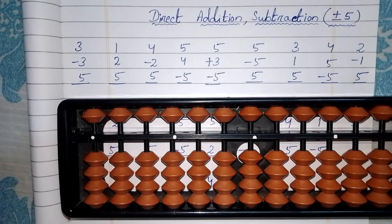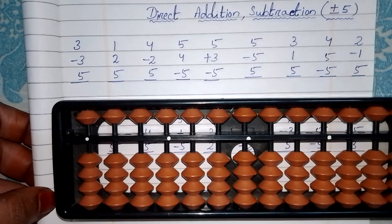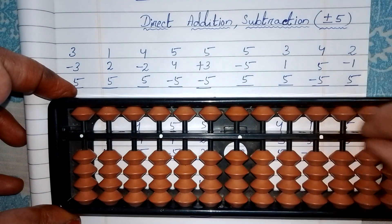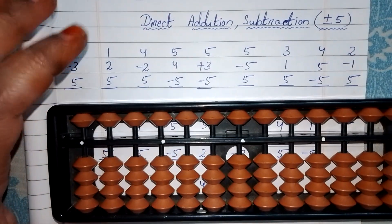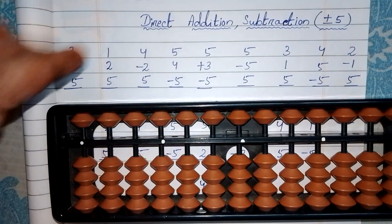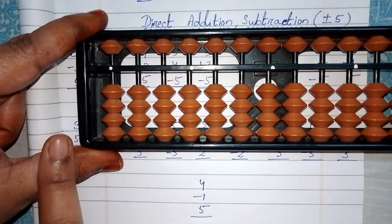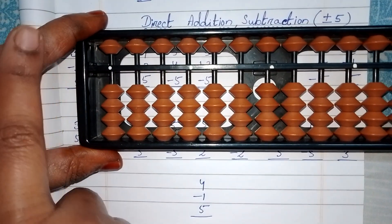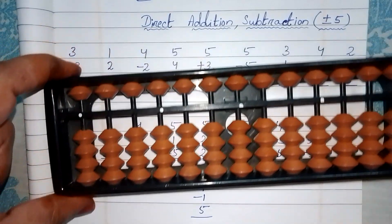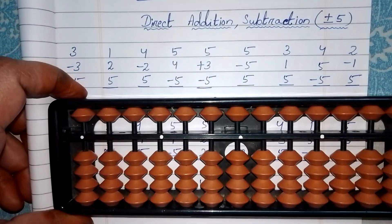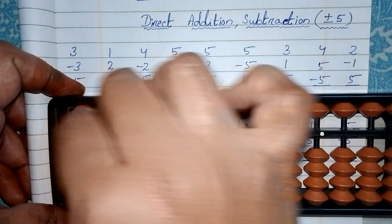Before we start the class, please like, share, and subscribe. Now, to start with five: first of all you have to hold your abacus with your left hand using index finger and thumb. While doing the sum you have to hold your abacus with your left hand index finger and thumb. You have to set zero before you start the sums on abacus.